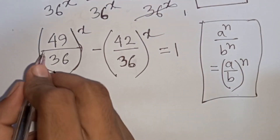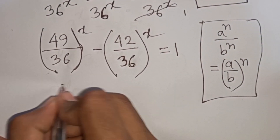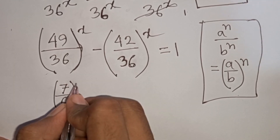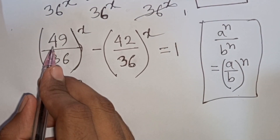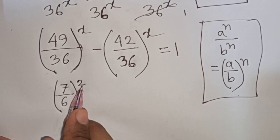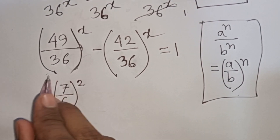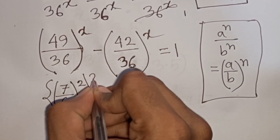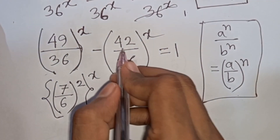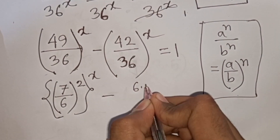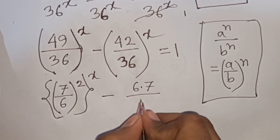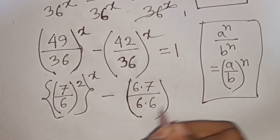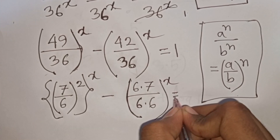Now 49/36 can be written as (7/6)^2, since 7² = 49 and 6² = 36. So the first bracket becomes (7/6)^2 raised to power x, minus 42/36 which is the same as (6×7)/(6×6), giving us (7/6)^x, equals 1.